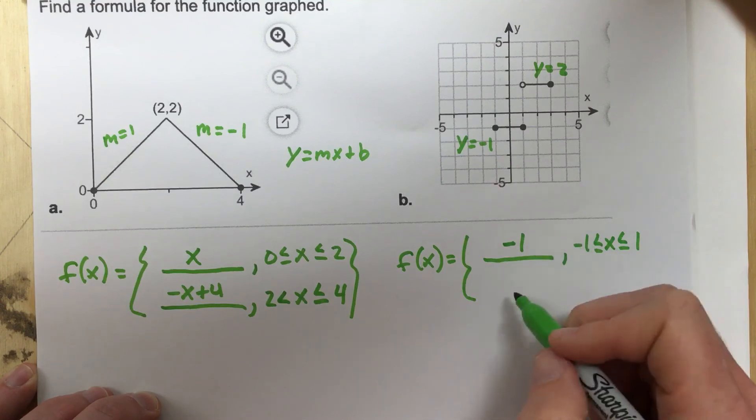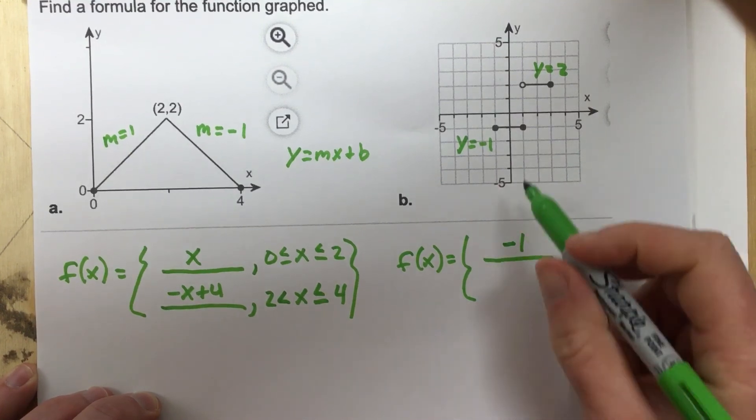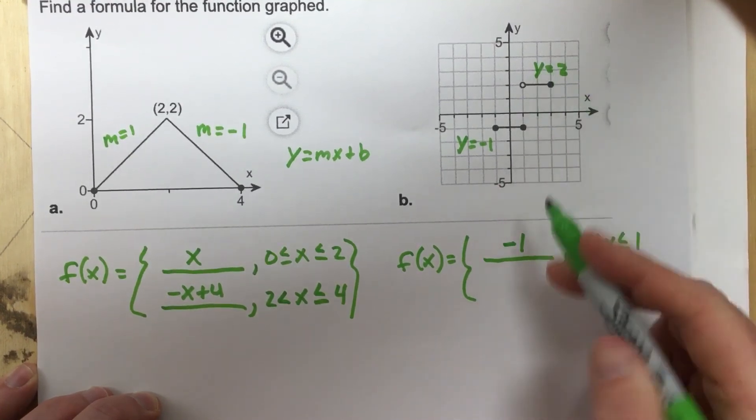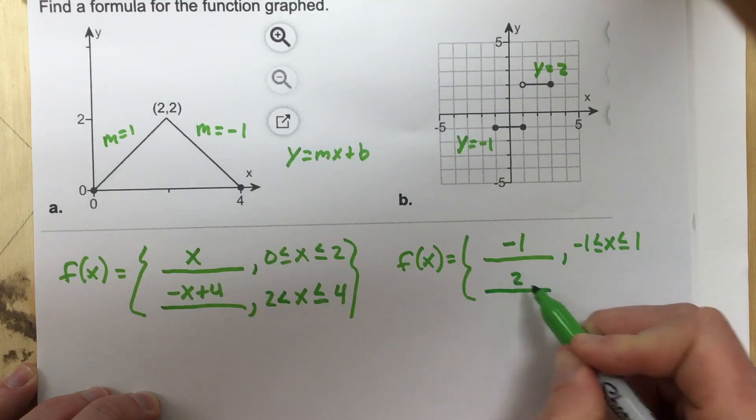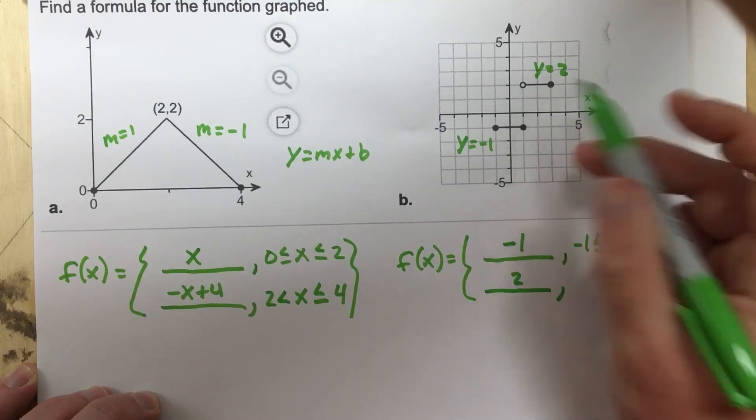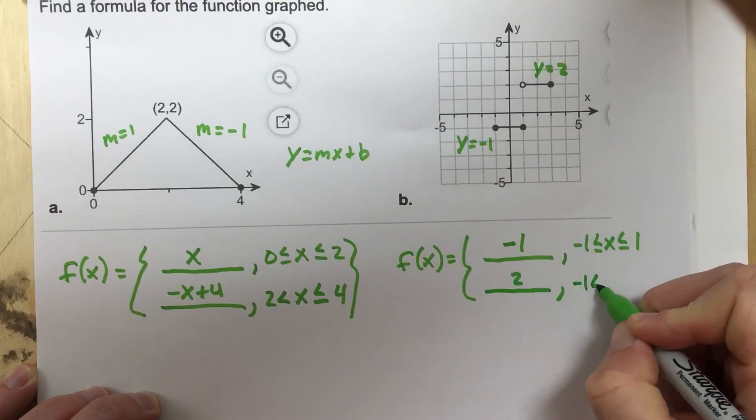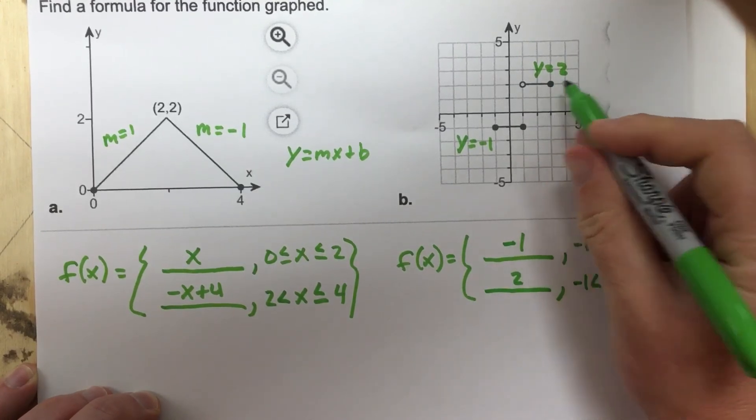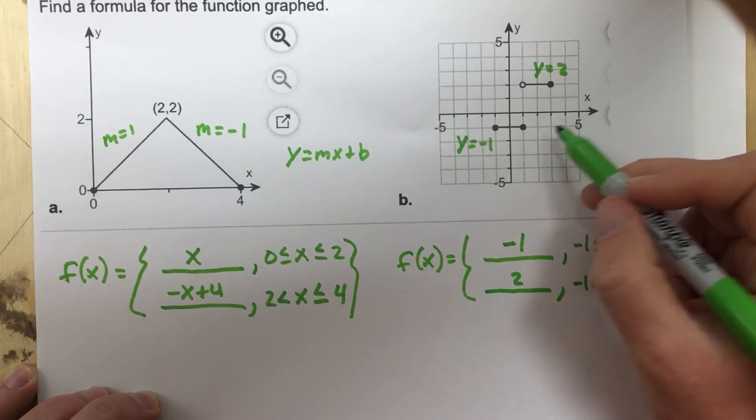And then we're going to, for the second one, say that it's 2 for the function. But that runs not from negative 1 because negative 1 is not included, so we're going to say negative 1 less than x, and then 2, or not 2, 3 is included here.